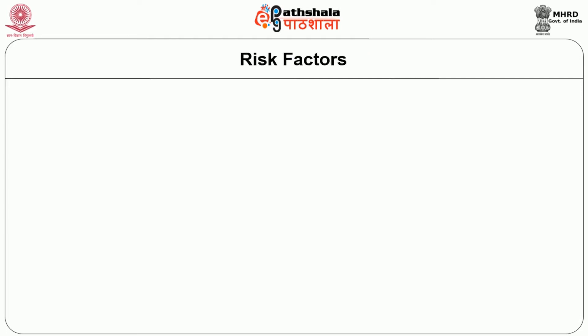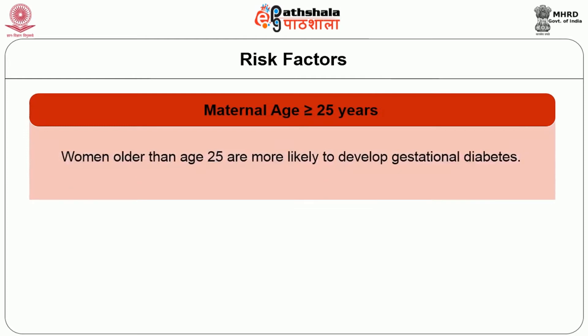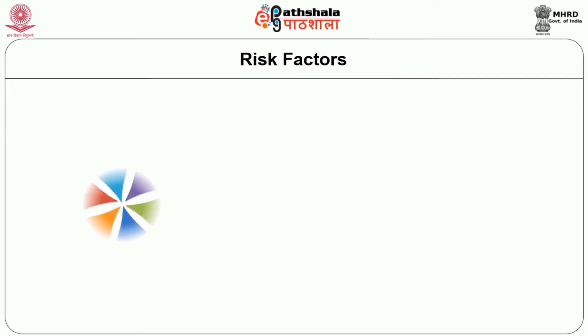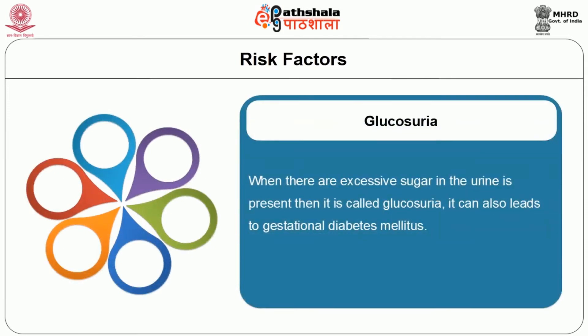Now let us see the risk factors for GDM. The first is maternal age above 25 years — women older than 25 are more likely to develop gestational diabetes. Second is family history of diabetes in a first-degree relative. The risk of developing gestational diabetes increases if the woman has pre-diabetes or if a close family member such as a parent or sibling has type 2 diabetes. The third risk factor is glucosuria — when there is excessive sugar in the urine — which can also lead to gestational diabetes mellitus.